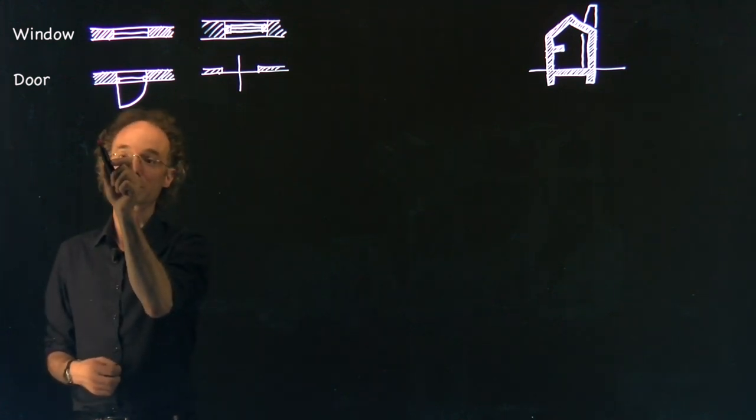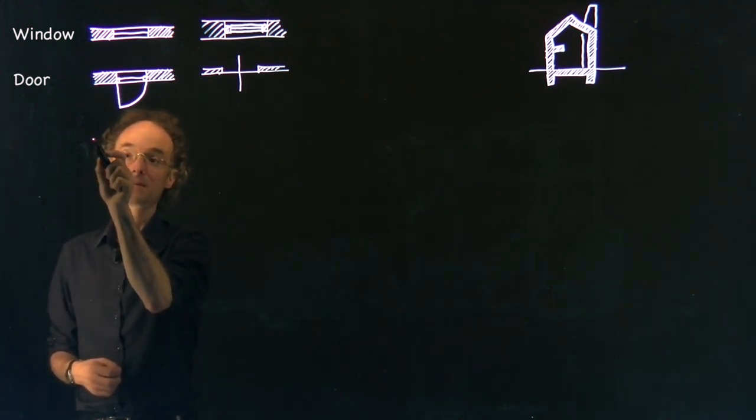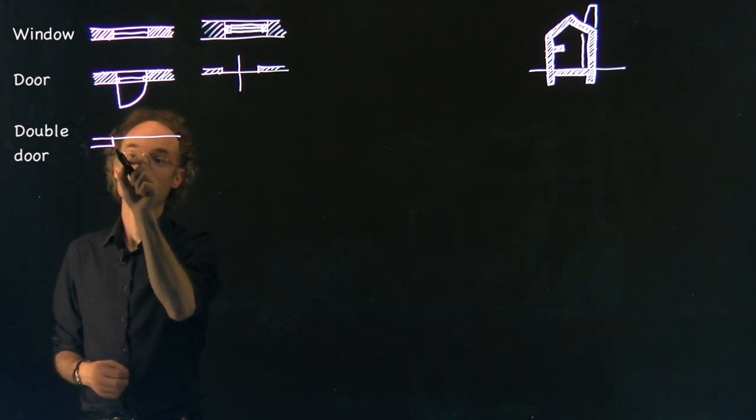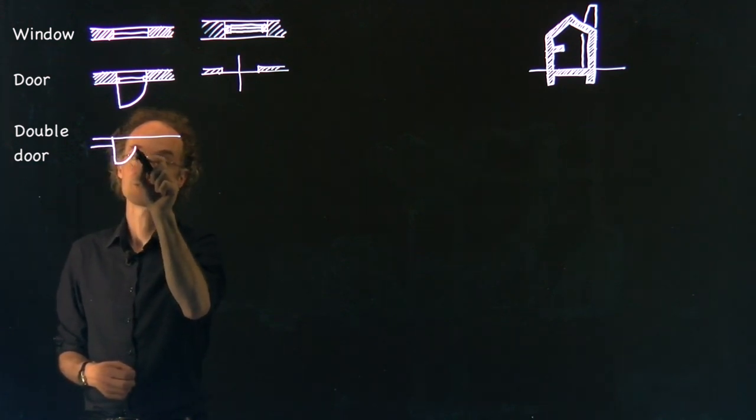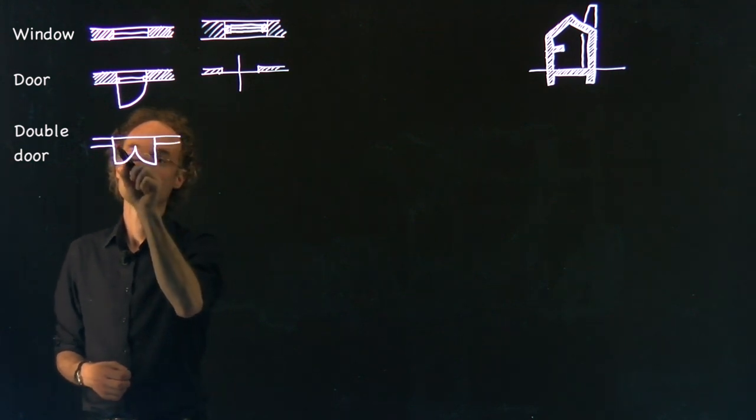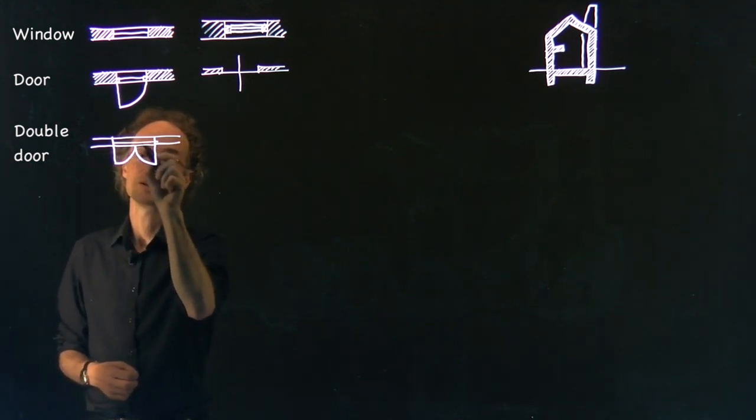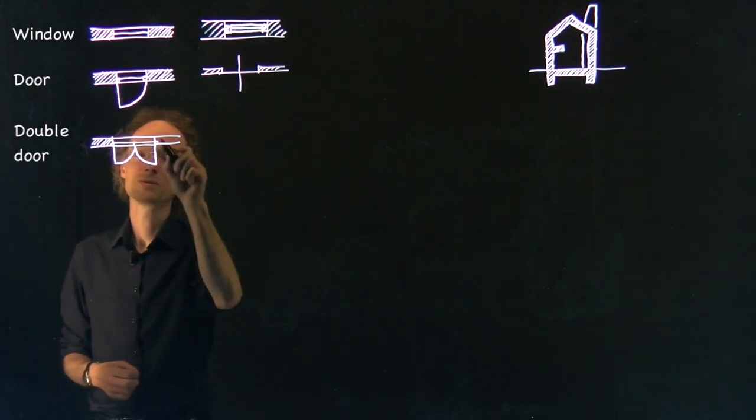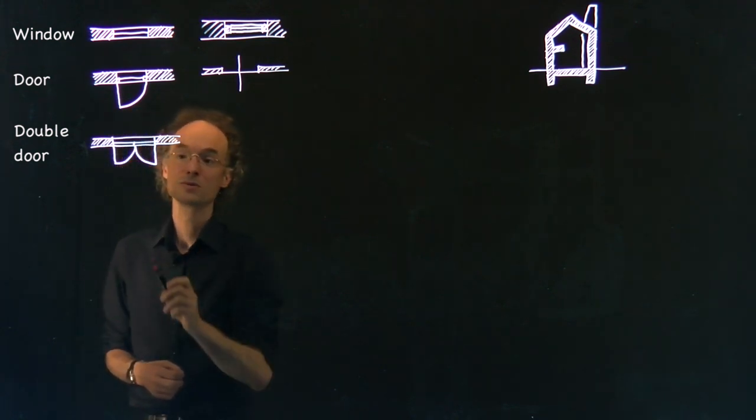Well, and this of course you can extend to a double door. It's very simple, it is just two turning circles. Maybe indicate the doors themselves, hatch the walls. Now I have a double door.